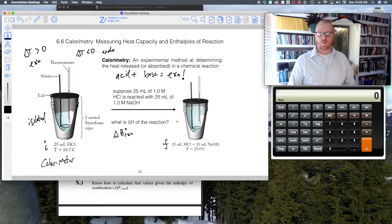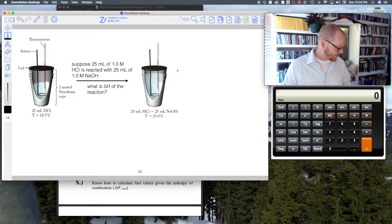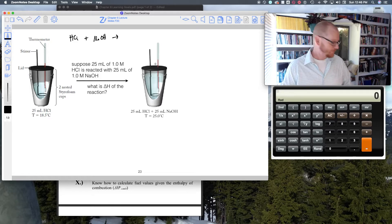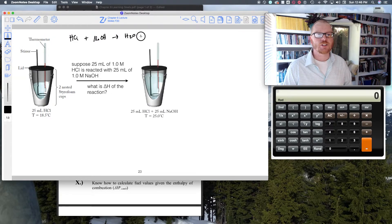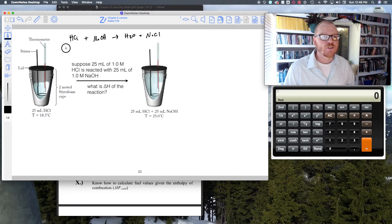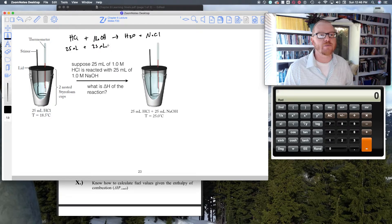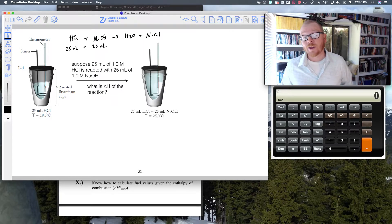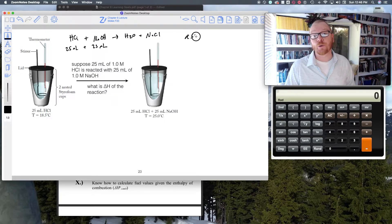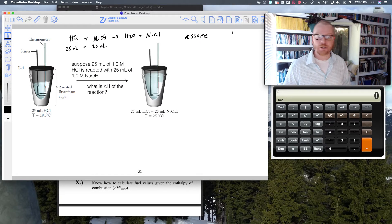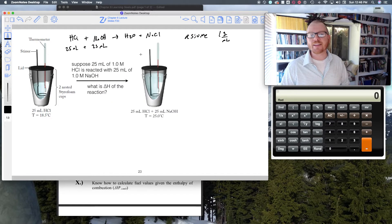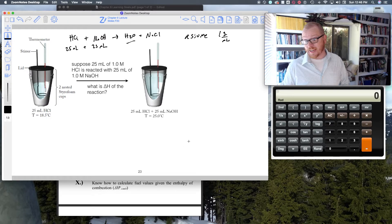Not only do we get that, but we can calculate the delta H of the reaction as well. So here I've got more space drawn out so we can do this reaction. This is going to be HCl plus NaOH. We know the products are salty water, H2O and NaCl. I'm adding 25 milliliters of this plus 25 milliliters of this. There's a couple things I need to know before I can proceed.